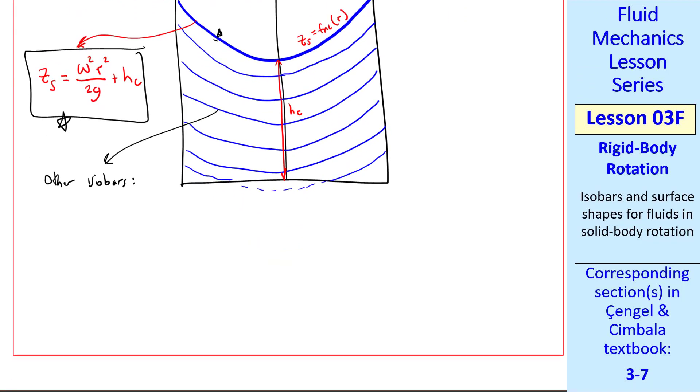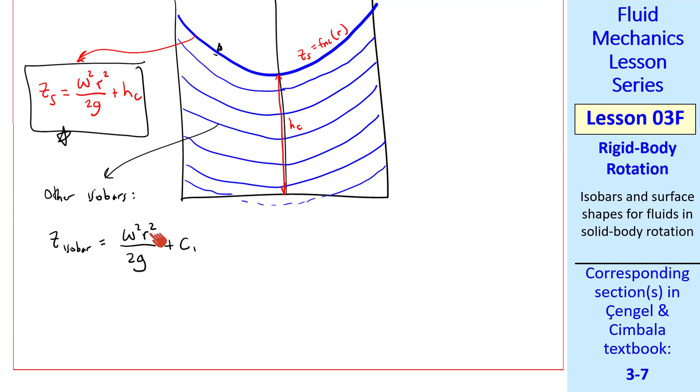So z isobar is omega squared r squared over 2g, the same value here, plus some c1, where c1 is not a constant. Rather, it increases with depth.